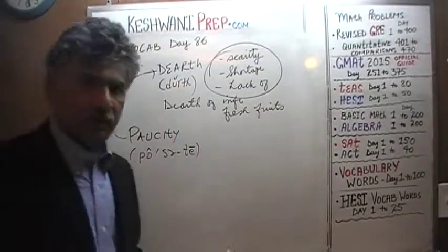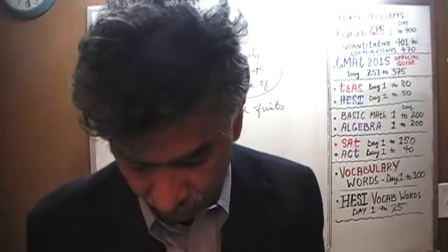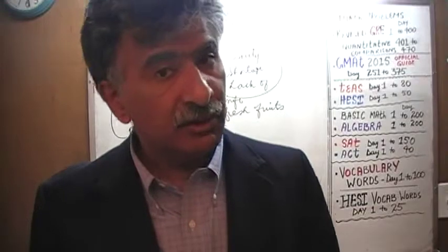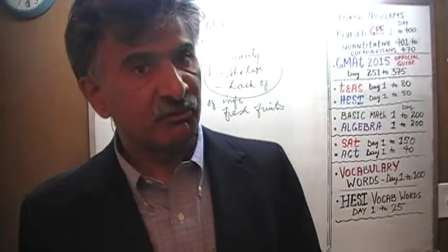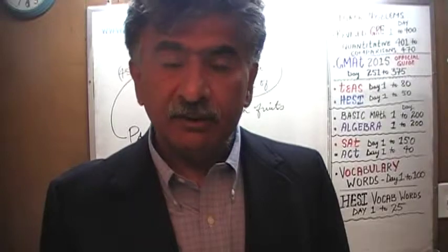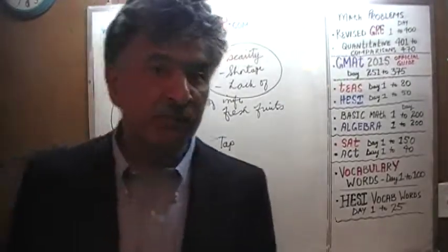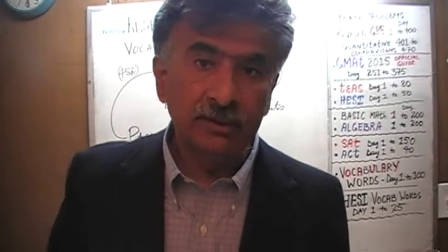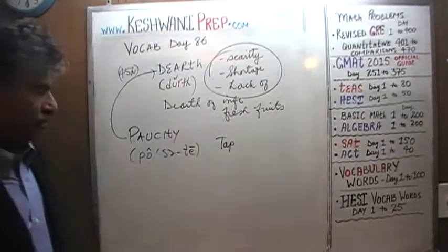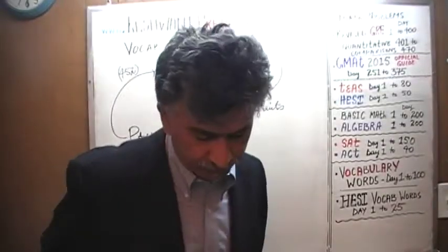For example, you might say Japan has paucity of — what do you suppose Japan has paucity of? Talent? Education? Of course not. Japan has paucity of natural resources. Japan has very few natural resources, despite the fact that they have a very high standard of living. They are very talented people and therefore they maintain a very high standard of living, despite the fact that they have paucity of natural resources — scarcity of natural resources, shortage of natural resources. They both mean the same thing. Japan has paucity of natural resources.